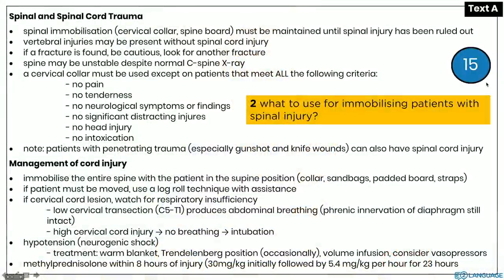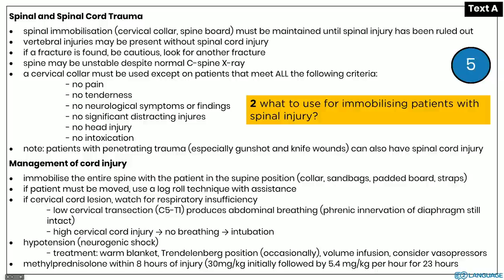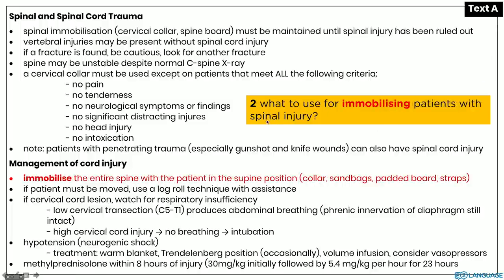Let's do another one. Identify a keyword in the question and scan your eyes across the text looking for that keyword. I would use the word 'immobilizing' here — 'spinal injury' is too generic, not specific enough. But 'immobilizing' is good. If you scan your eyes across, you'll see the word 'immobilize'. So now we know we're reading the correct part of the text. On your answer sheet, you write text A — or just A. That was pretty straightforward.